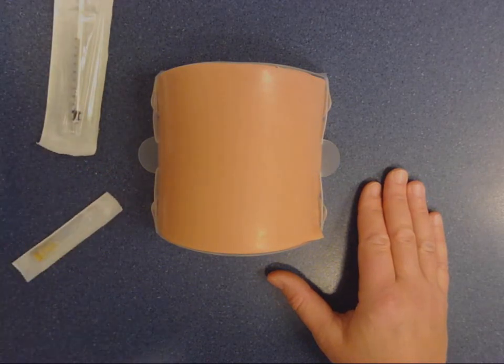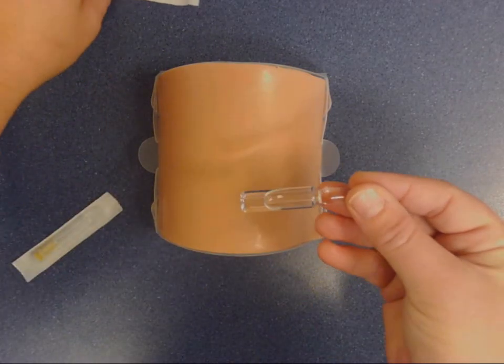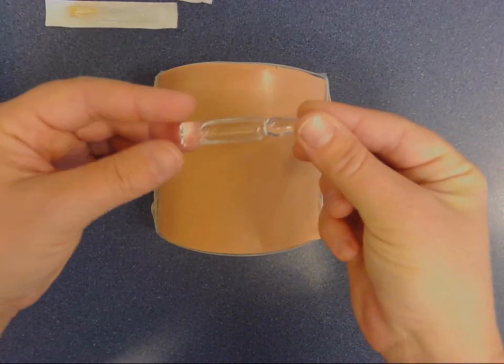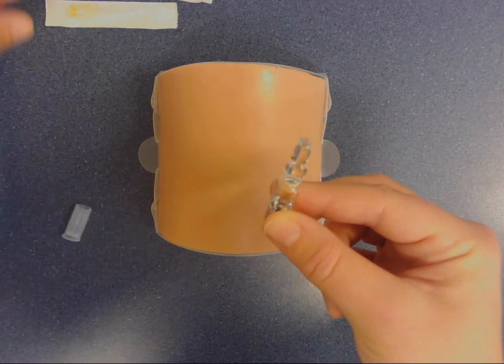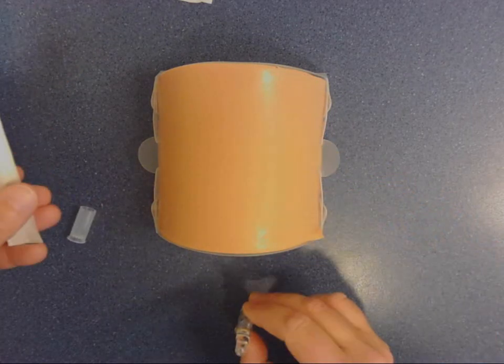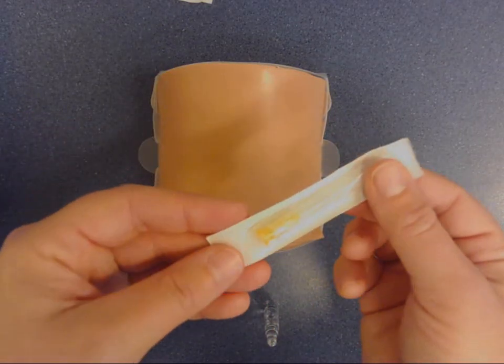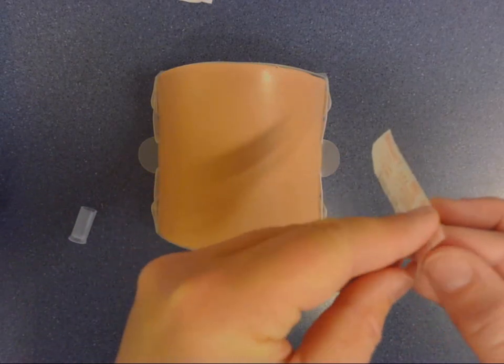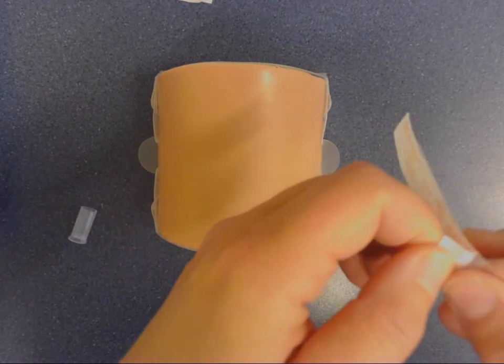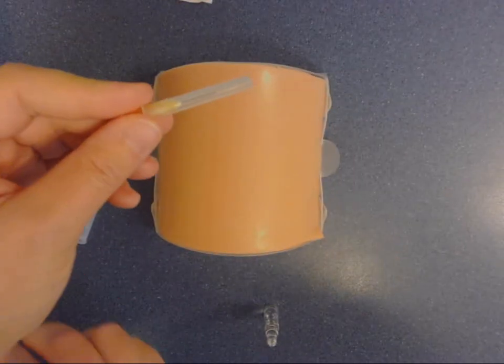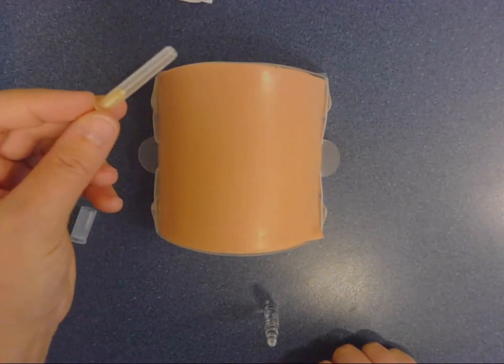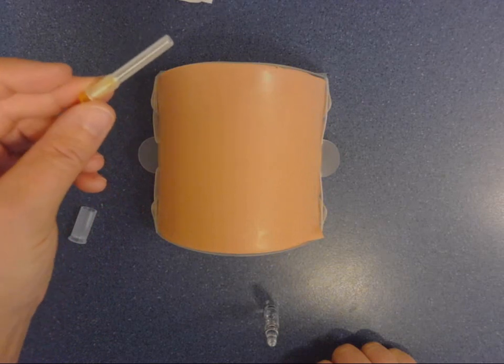We're going to draw up our drug from a glass vial, and we're going to draw up our drug with the smallest needle that we've got available. So in this instance, it's a short orange 25 gauge needle.